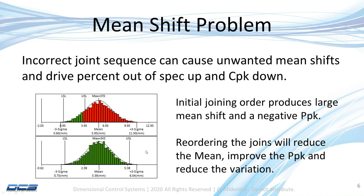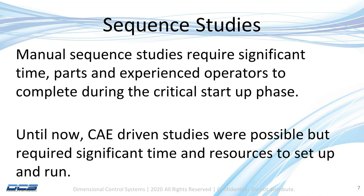What we're trying to do is reorder the joints so that we can get the mean where it needs to be, or as close as possible, and reduce variation — which will help us get everything in spec and improve process capability indices like PPK or CPK. In my time at an OEM, about twice a year I would be called into a plant where we had a variation problem or a mean shift problem at startup production, and I'd be asked to help re-sequence the order of the joints. That typically required people, material, and experienced operators, all while launching a car.